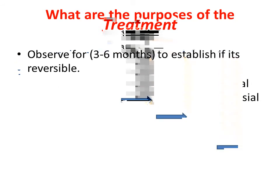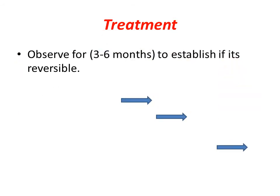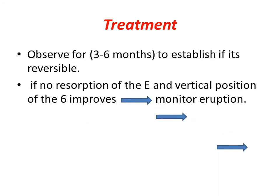The treatment starts by observation for 3 to 6 months to establish if it is reversible. If there is no resorption of the E and the vertical position of the sixth improves, we monitor eruption.